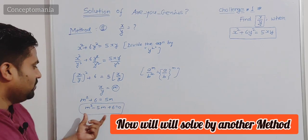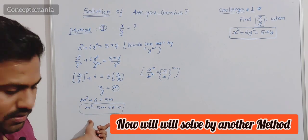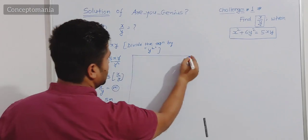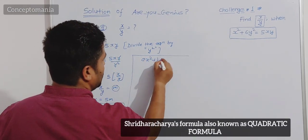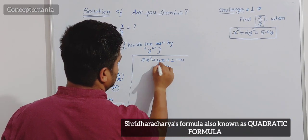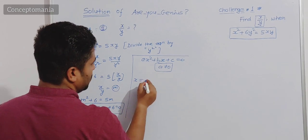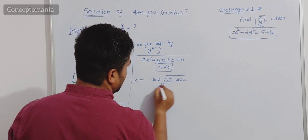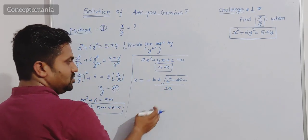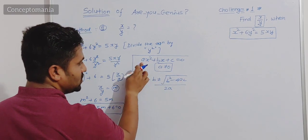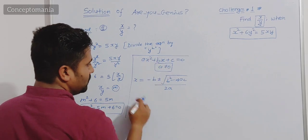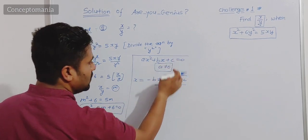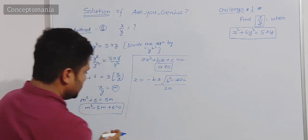Now we solve the same equation using another method — the Sridharacharya formula — which is popularly used to find solutions of a quadratic equation. If ax square plus bx plus c equals 0, where a is not equal to 0, then x equals minus b plus minus root over b square minus 4ac, whole divided by 2a. Here a is the coefficient of x square, b is the coefficient of x, and c is the remaining constant term.